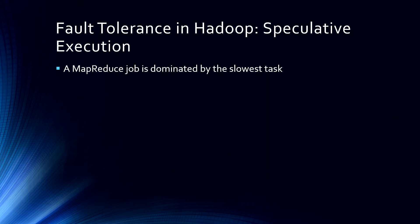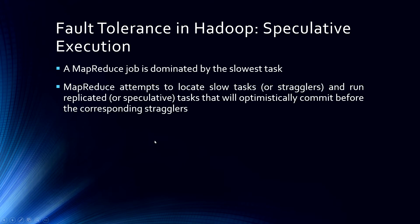A MapReduce job is dominated by the slowest task — whichever task took the most amount of time to execute. MapReduce attempts to locate the slow running task and runs a replicated or speculative task that will optimistically commit before the corresponding stragglers. There is a task that is struggling — going slower than expected. All of this fault tolerance on commodity hardware is also there to optimize our processing time. We cannot wait 20 hours for a 1TB job to execute — we could execute 10 tasks in that time.